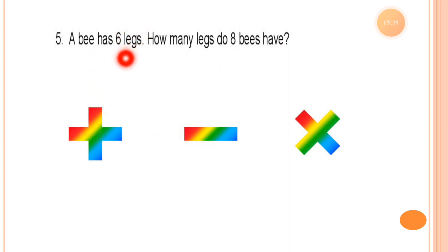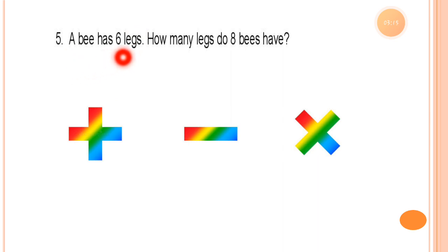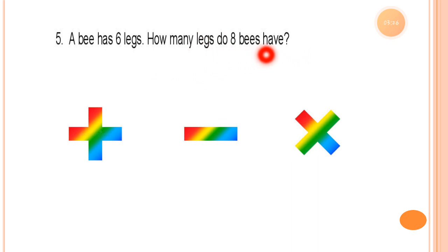A bee has 6 legs — you all know what a bee is. How many legs do 8 bees have? So if 1 bee has 6 legs, how many legs do 8 bees have? That is the question.